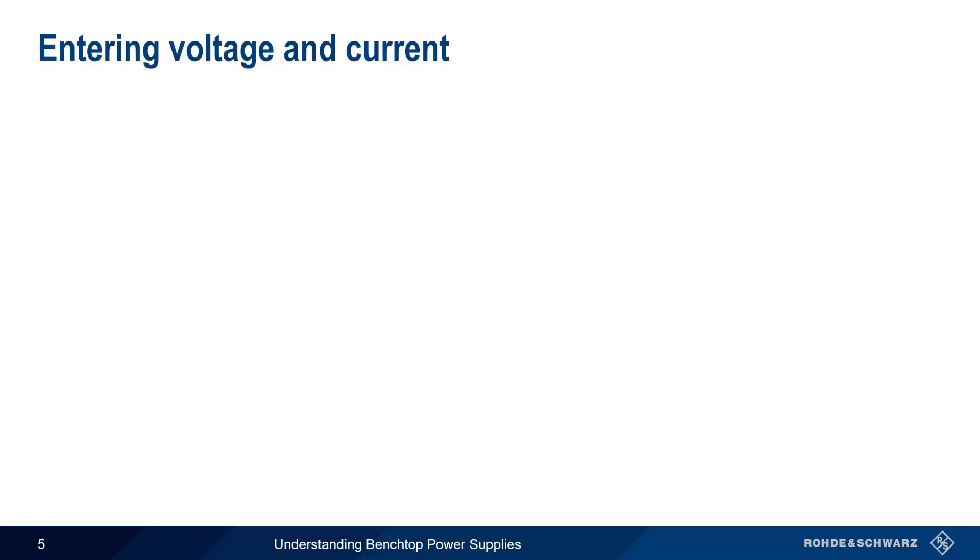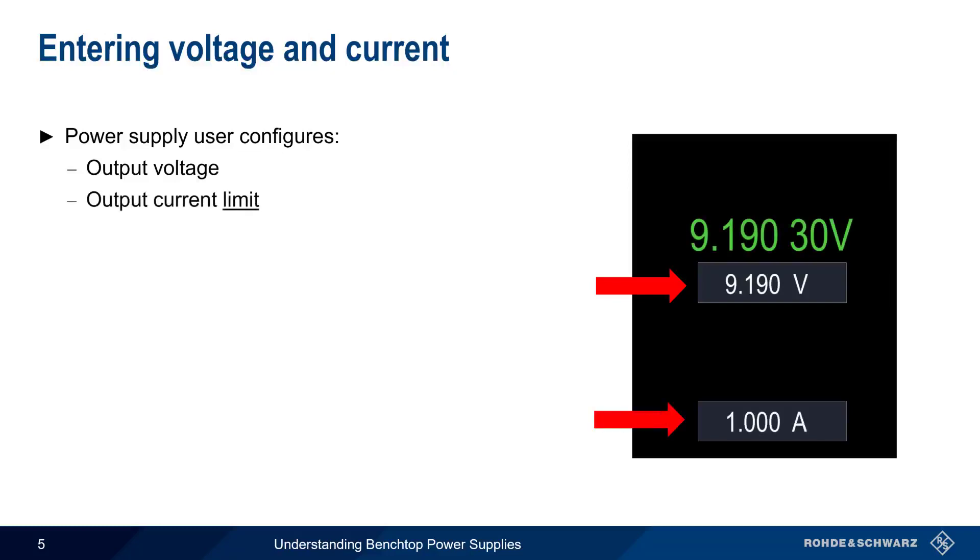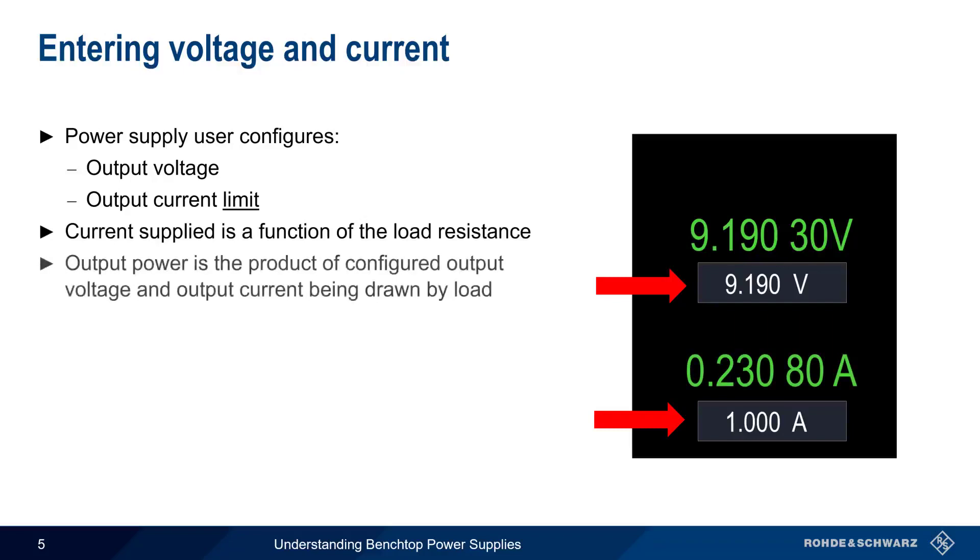Now that we've covered specifications, we'll move on to how we configure or enter the desired voltage and current. The user of a benchtop power supply configures two things: the desired output voltage and the output current limit. We don't specify the output current itself, because this is a function of the load resistance. We'll come back to this distinction in a few minutes. Output power is simply output voltage times output current.